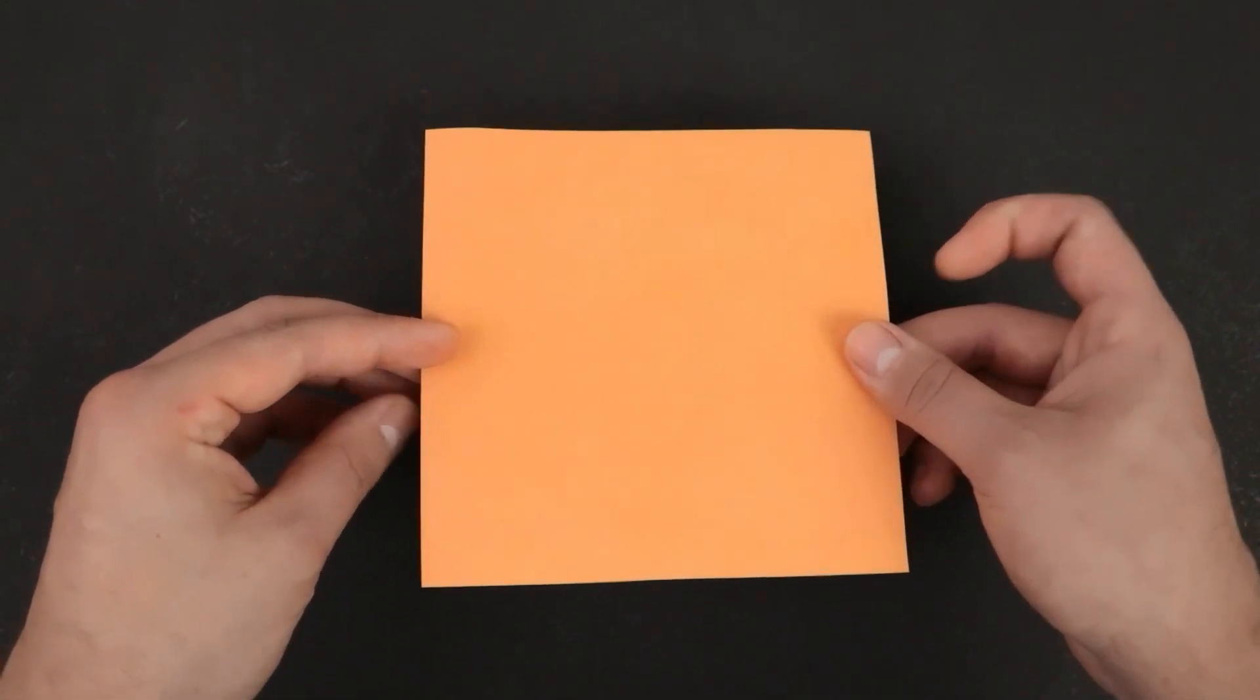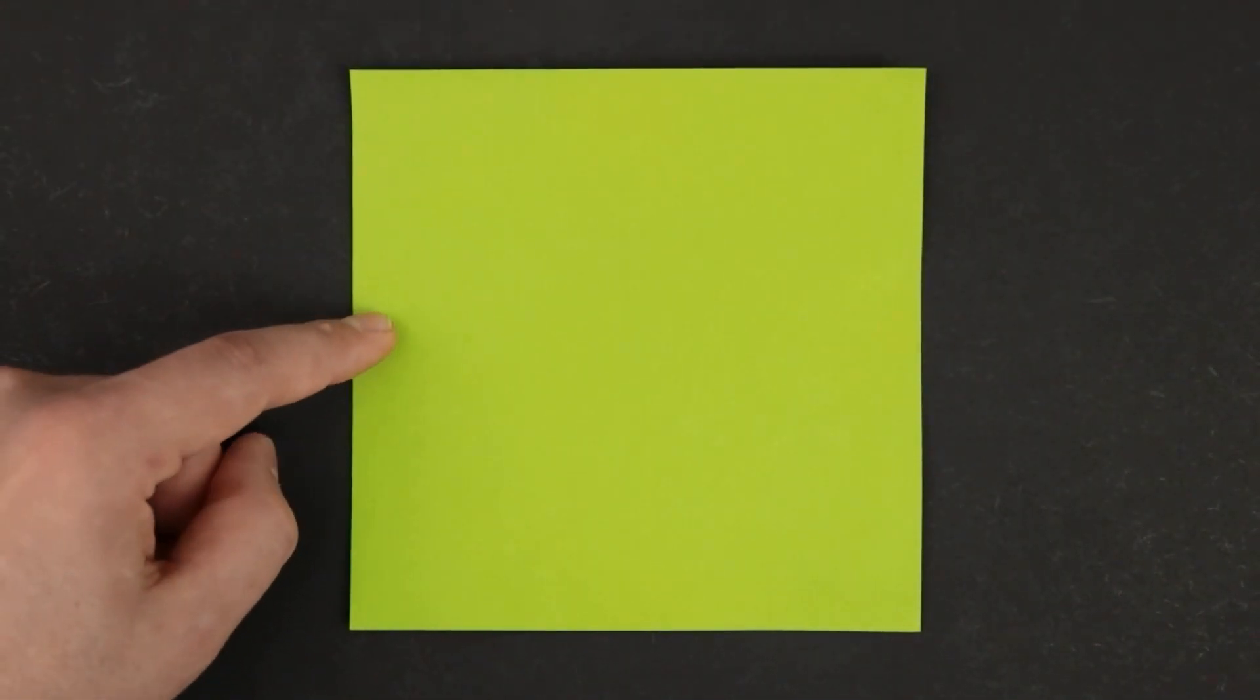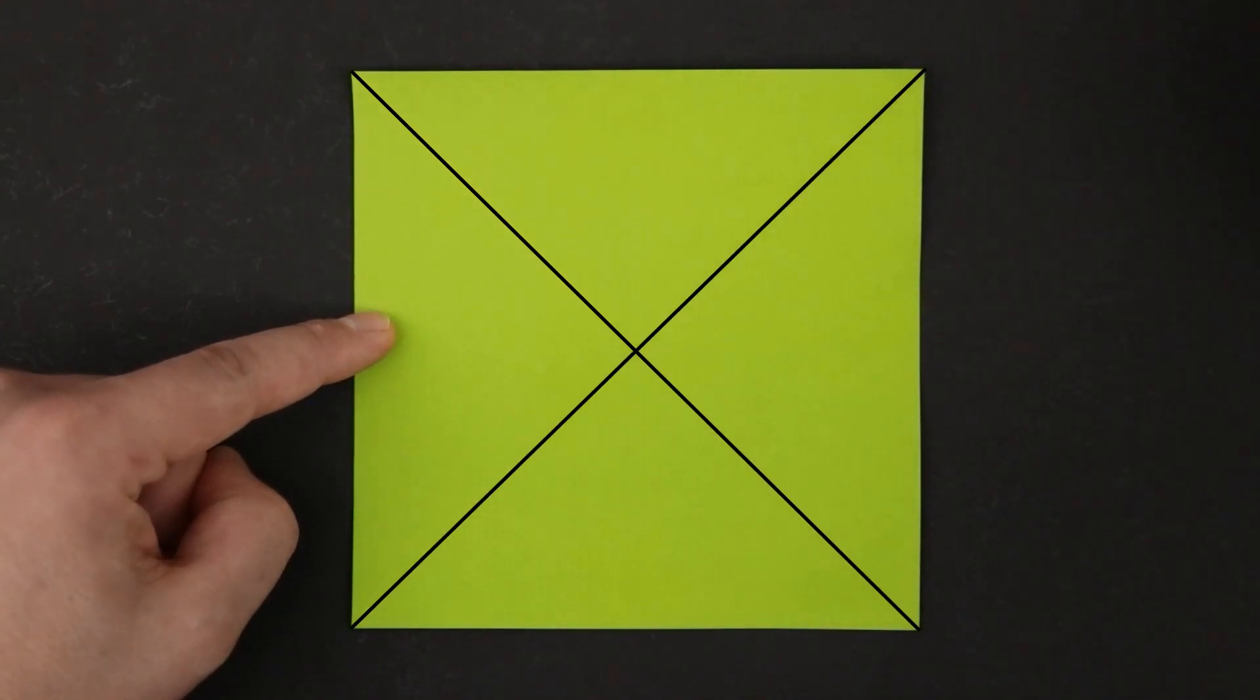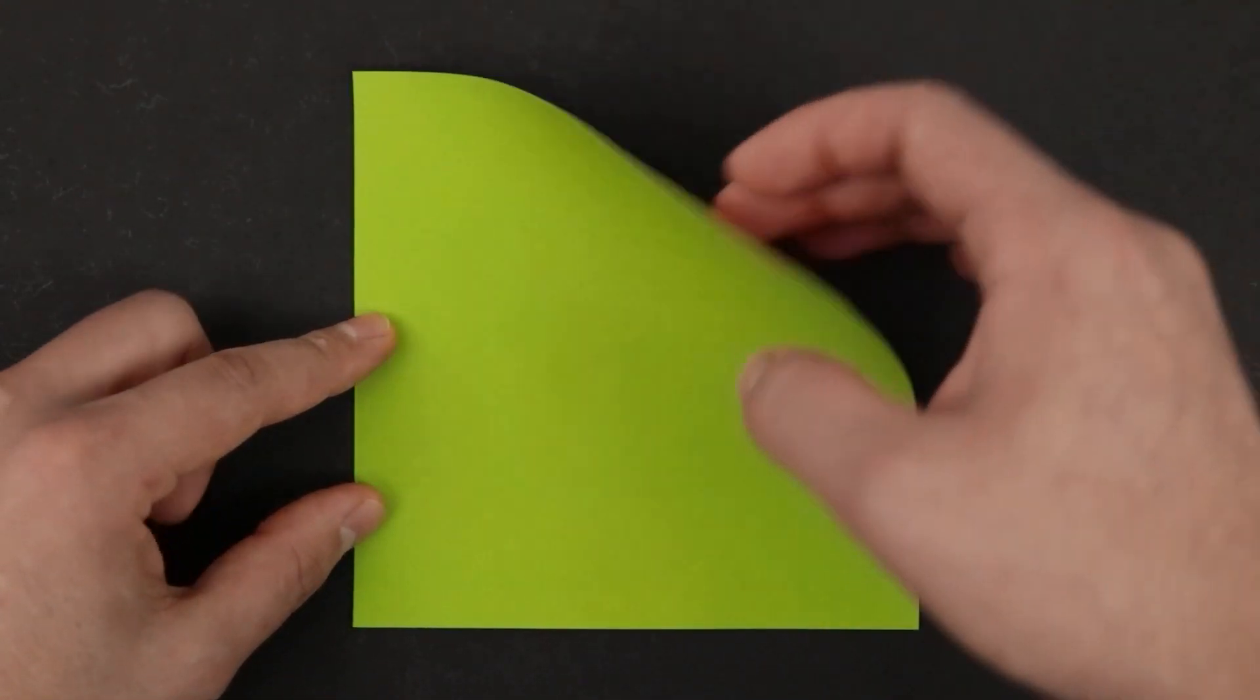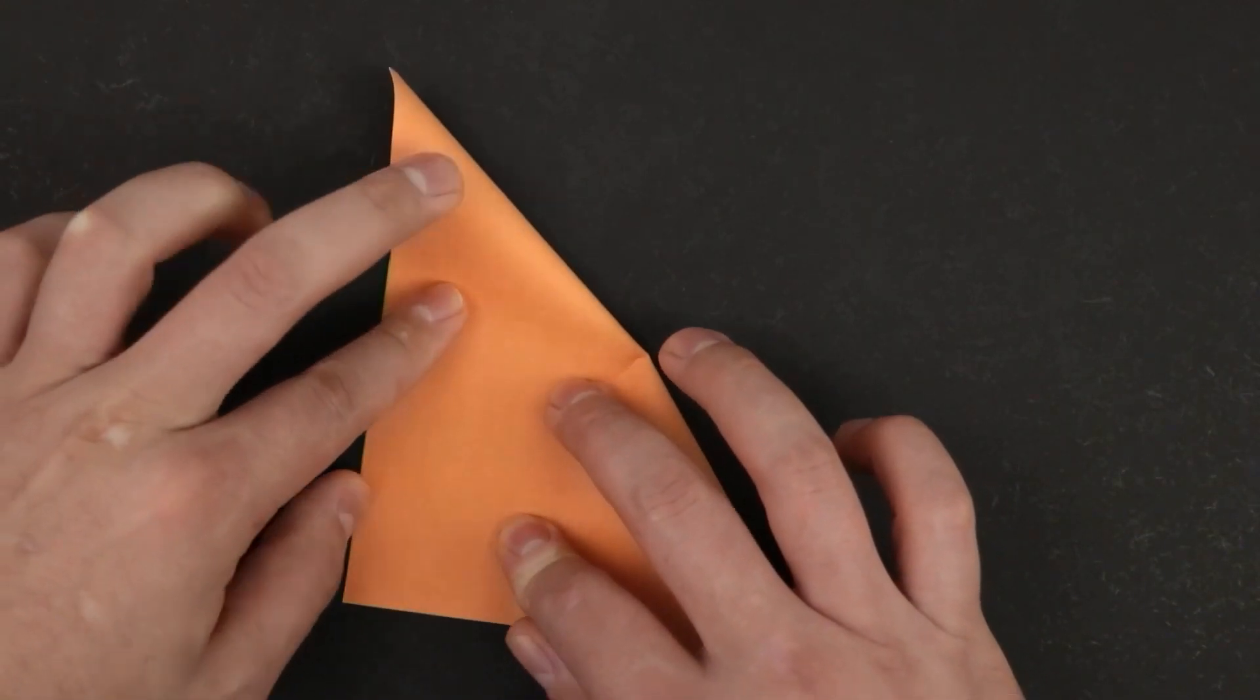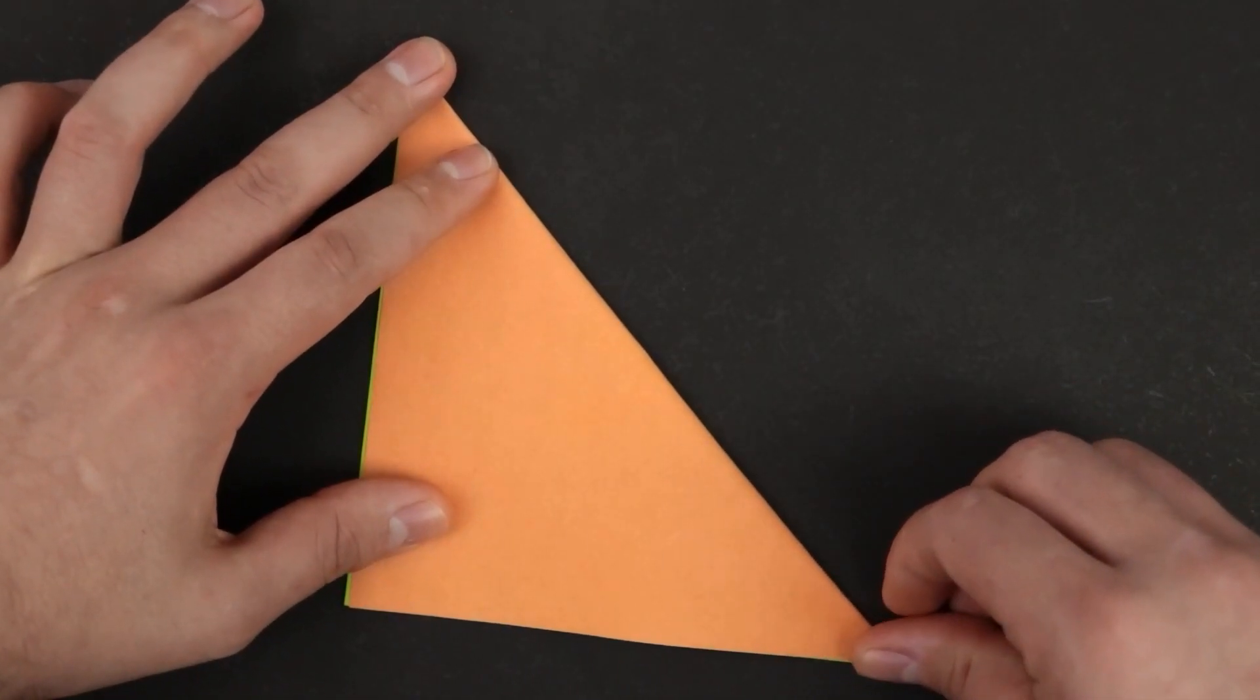Start with the orange side facing down. First of all we need to fold in half along both diagonals. So just bring one corner to the other. Reinforce.